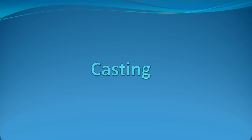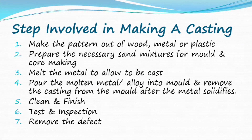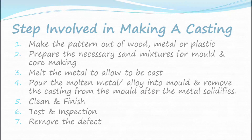In this video we learn about casting, methods of casting, and their inspection and defects. Steps involved in making the casting: make the pattern out of wood, metal or plastic; prepare the necessary sand mixtures for mold and core making; melt the metal to allow it to be cast; pour the molten metal or alloy into the mold and remove the casting from the mold after the metal solidifies; clean and finish; test and inspection; and remove the defect.